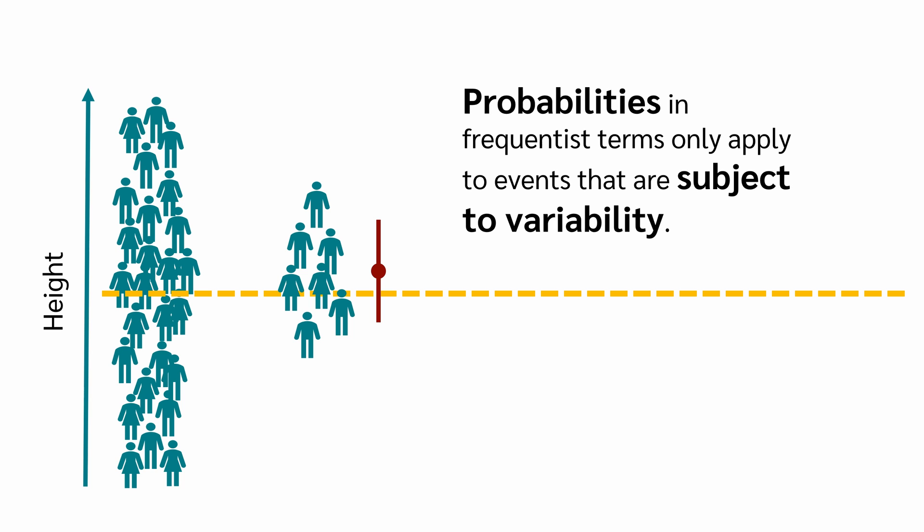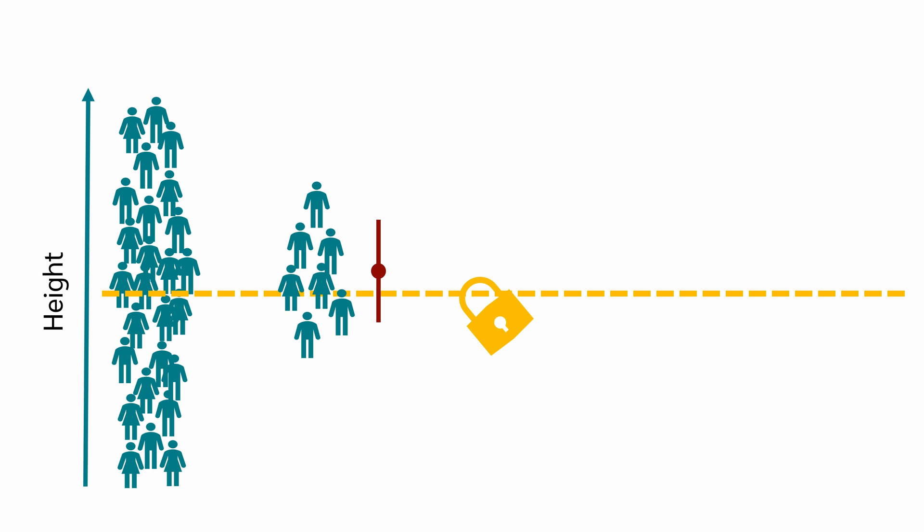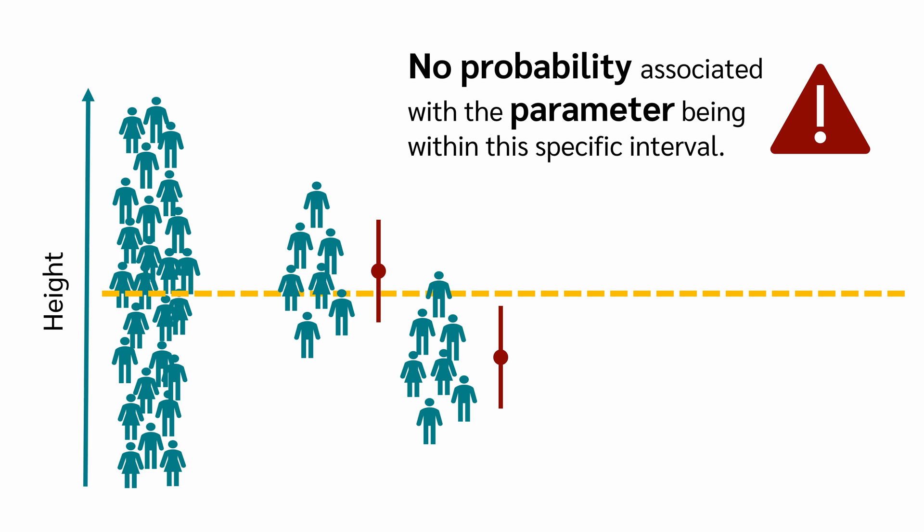Because probabilities in frequentist terms only apply to events that are subject to variability. And again, the true parameter is fixed and cannot change. The only thing that varies is the sample data we collect. Every time we draw a new sample, we have new data and consequently a new mean and confidence interval. So, for example, in this sample, the true value falls within the confidence interval. If we take a second sample, maybe the confidence interval will not include the true value.